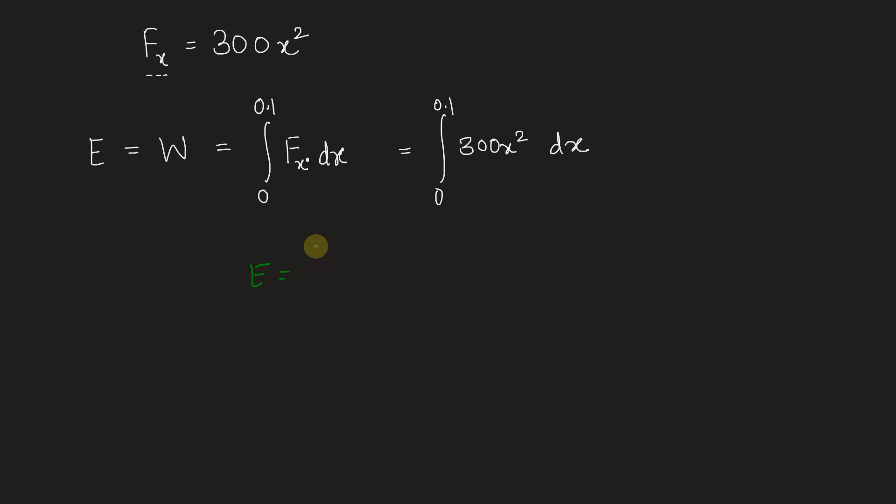We have E = integration of 300x², which is 300x³/3, with limits 0 to 0.1. So 300/3 gives us 100 × (0.1³ - 0³). 0³ is 0, so E = 100 × 0.1³. We can write this as 1/10³, which is 1/1000. So 100/1000, which is nothing but 0.1 joules. Energy is measured in joules.